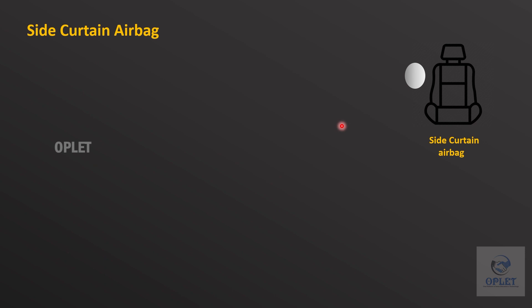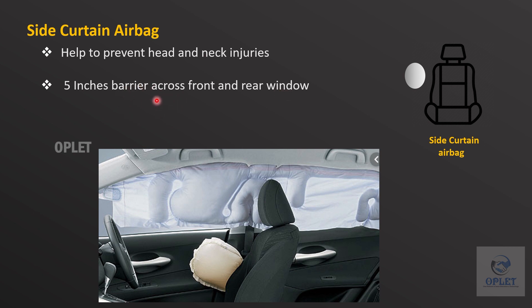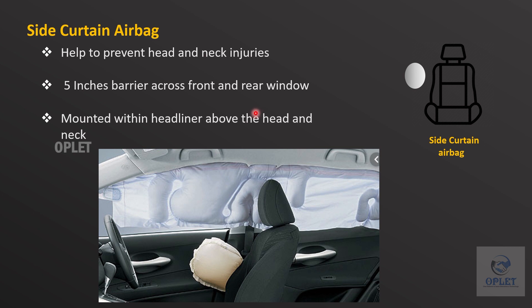Now we will explore side curtain airbags. Side curtain airbags help to prevent neck and head injuries. When the car senses a side impact, the curtain airbags emerge and inflate, forming a 5-inch barrier across the front and rear windows. This airbag prevents the occupant's head from being smacked into hard surfaces. Curtain airbags are most often mounted within the headliner, above the door and windows.